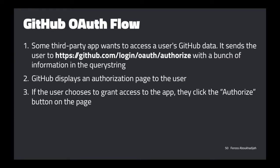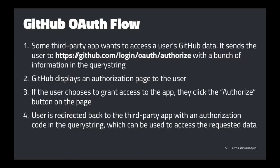If the user grants access and clicks 'Authorize', they get redirected back to the third-party application. GitHub, when it does that redirect, includes in the query string a GitHub token that the application can use to access your data out of band. This token is basically like the password to your account for that app — the key to your GitHub account that the app can use.